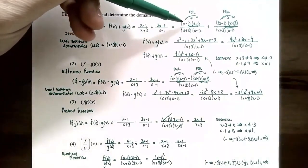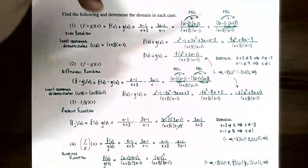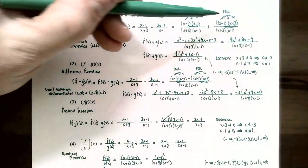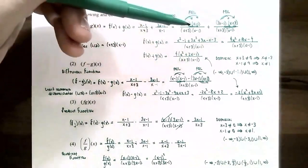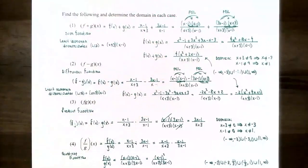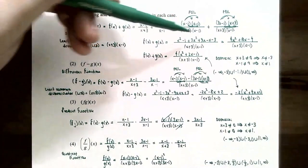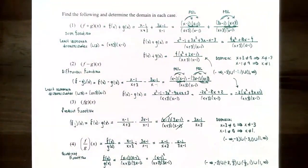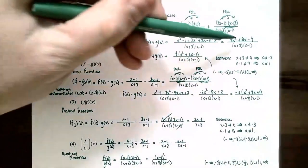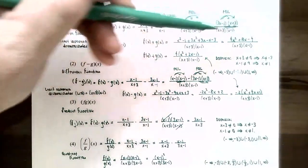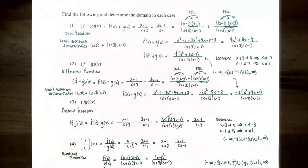Rewrite both fractions with the LCD. The first fraction is missing the x minus one factor, so multiply numerator and denominator by x minus one. The second fraction is missing the x plus three factor, so multiply by x plus three. Using FOIL, x minus one times x minus one gives x squared minus x minus x plus one, and three x minus one times x plus three gives three x squared plus nine x minus x minus three. Combining the numerators gives four x squared plus eight x minus four, over x plus three times x minus one. Factoring out four from the numerator gives four times the quantity x squared plus two x minus one, divided by x plus three times x minus one. There are no common factors to cancel.